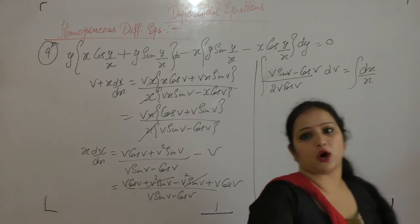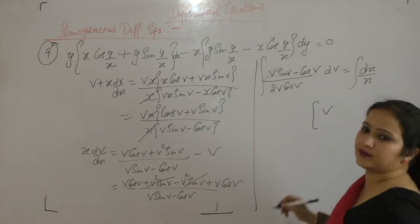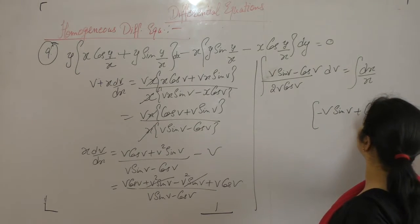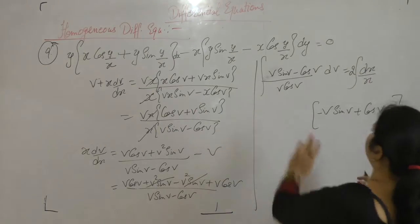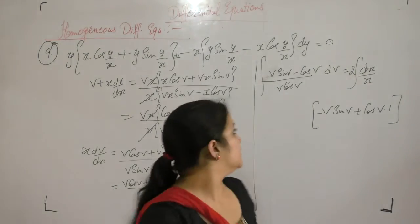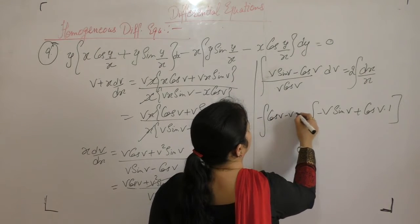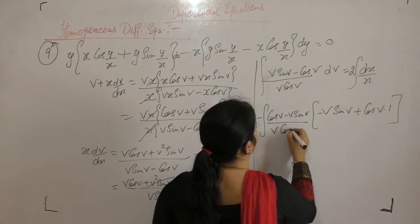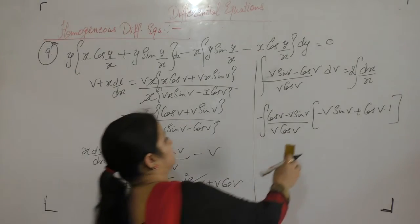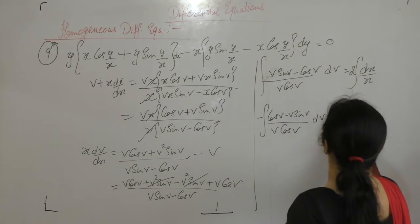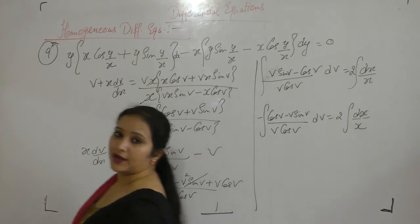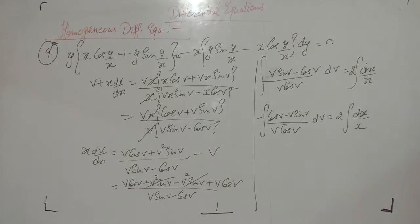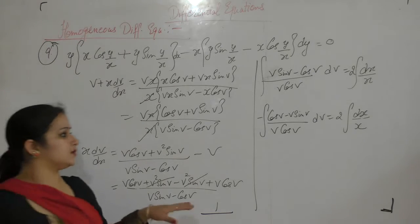We observe the derivative of v cos v: first function as it is times derivative of cos is minus sin, plus cos v times derivative of v is 1. Taking the negative sign common, the integrand on the left becomes of the form f'(x) upon f(x), with a factor of 2. So integrating: 2 integral of f'(x) upon f(x) dv equals 2 integral dx upon x, and integral of f'(x)/f(x) equals log of f(x).